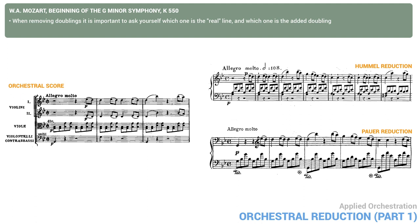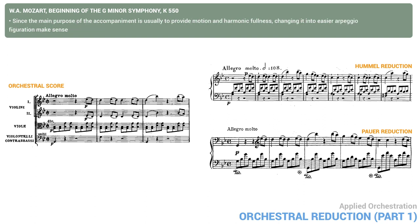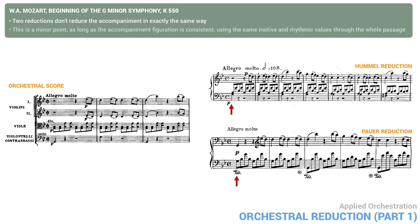Another common element in both versions is that they change the accompaniment figuration. The repeated note figure in the strings is easy for them, but at this speed for the piano it's much harder — more virtuoso. Since the main purpose of the accompaniment is usually to provide motion and harmonic fullness, changing it into easier arpeggio figuration makes sense. Note that the two reductions don't reduce the accompaniment in exactly the same way. This is a minor point, as long as the accompaniment figuration is consistent, using the same motive and rhythmic values throughout the whole passage. Changing motives in midstream would distract the listener's attention.